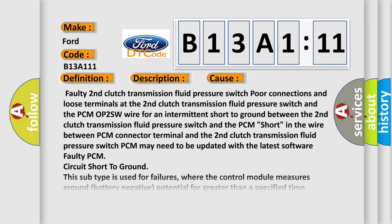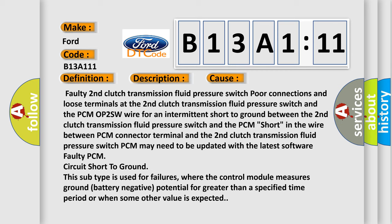This diagnostic error occurs most often in these cases: faulty second clutch transmission fluid pressure switch, poor connections and loose terminals at the second clutch transmission fluid pressure switch, and the OP25W wire for an intermittent short to ground between the second clutch transmission fluid pressure switch and the PCM.